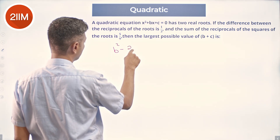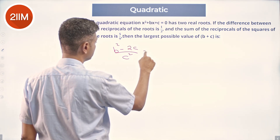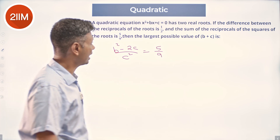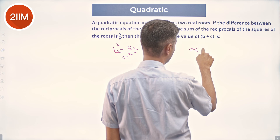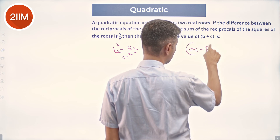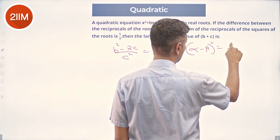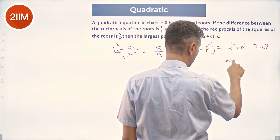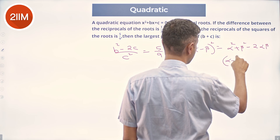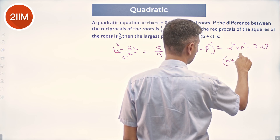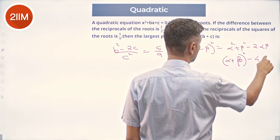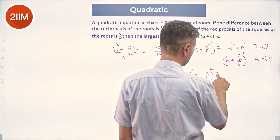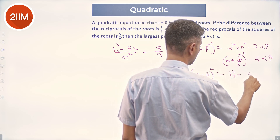So we have b² − 2c over c² equals 5/9. Now consider (α − β)², which equals (α + β)² − 4αβ. In terms of b and c, that gives us α − β whole squared equals b² − 4c.